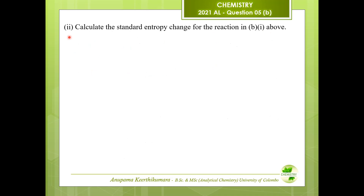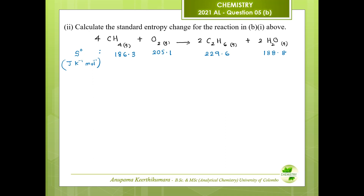Question number 2: calculate the standard entropy change for the reaction in part B1. First, we write the expression: standard entropy change equals sigma standard entropy of products minus sigma standard entropy of reactants.